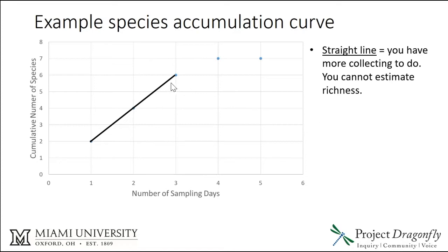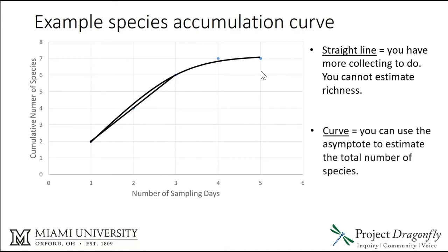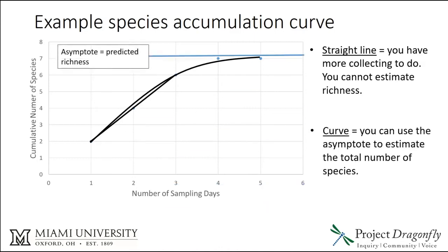However, if you went out on day four and got just one more species, so you're at seven, and then on day five you get no new species, you start to see a different relationship — one of a curve. If you have a curve, you can estimate the number of species using the asymptote, the straight line that the curve is approximating. That asymptote is your predicted number of species, or predicted species richness.